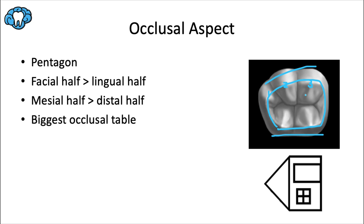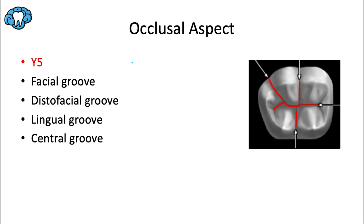This is what I call the Y5 tooth. There are five cusps: mesiofacial, distofacial, distal, distolingual, and mesiolingual — and the major grooves of the tooth form a Y, hence 'Y5.' Those grooves are the facial groove, which separates the mesiofacial and distofacial cusps; the distofacial groove, which separates the distofacial and distal cusps and is also where the oblique ridge of the opposing maxillary first molar sits; and the lingual groove, which separates the mesiolingual and distolingual cusps.